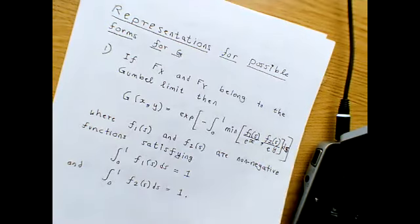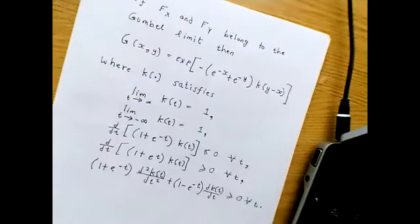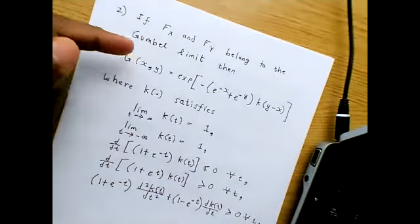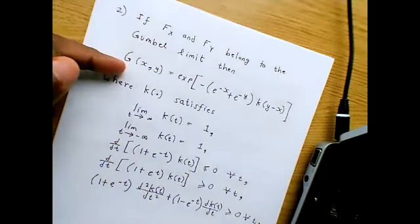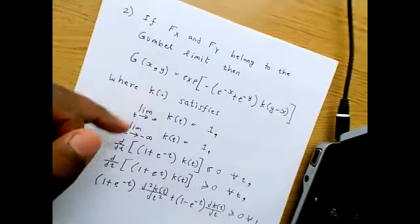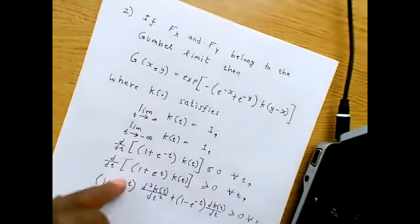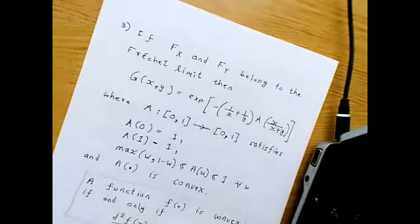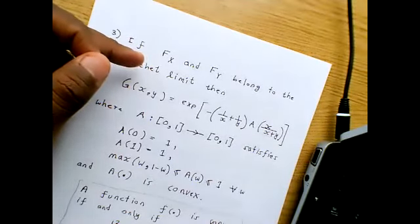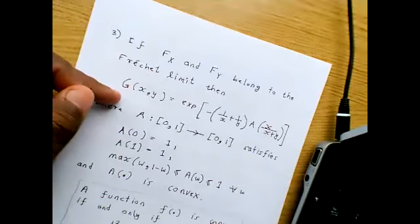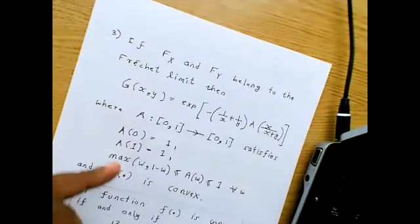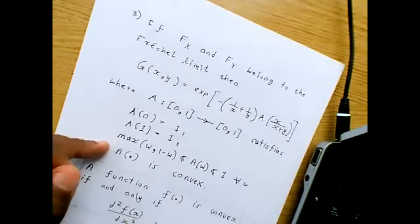That was one representation from Tuesday. The second representation was: if the marginals belong to the Gumbel domain, then the possible forms for the bivariate extreme value distribution can be expressed via a function K satisfying these five conditions. The third representation is where if the marginals belong to the Fréchet domain, the bivariate extreme value distribution can be expressed with a function A from the unit interval to the unit interval satisfying four conditions.